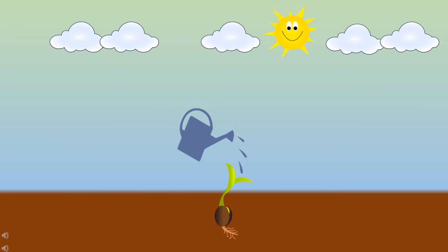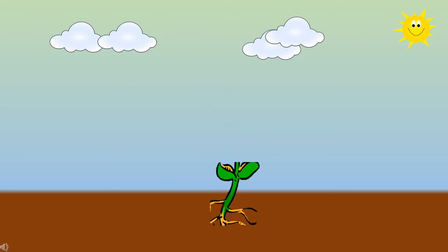Here we can see a tiny shoot has come out of the seed. Children, here you can see a small baby plant has come out of a seed. Baby plant is known as a sapling.